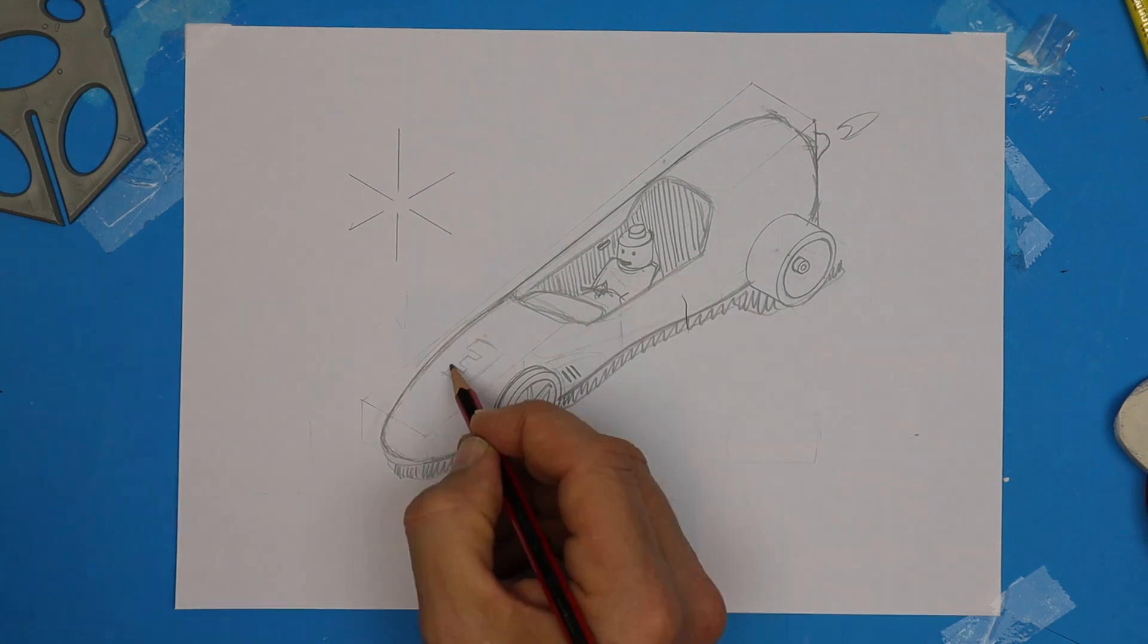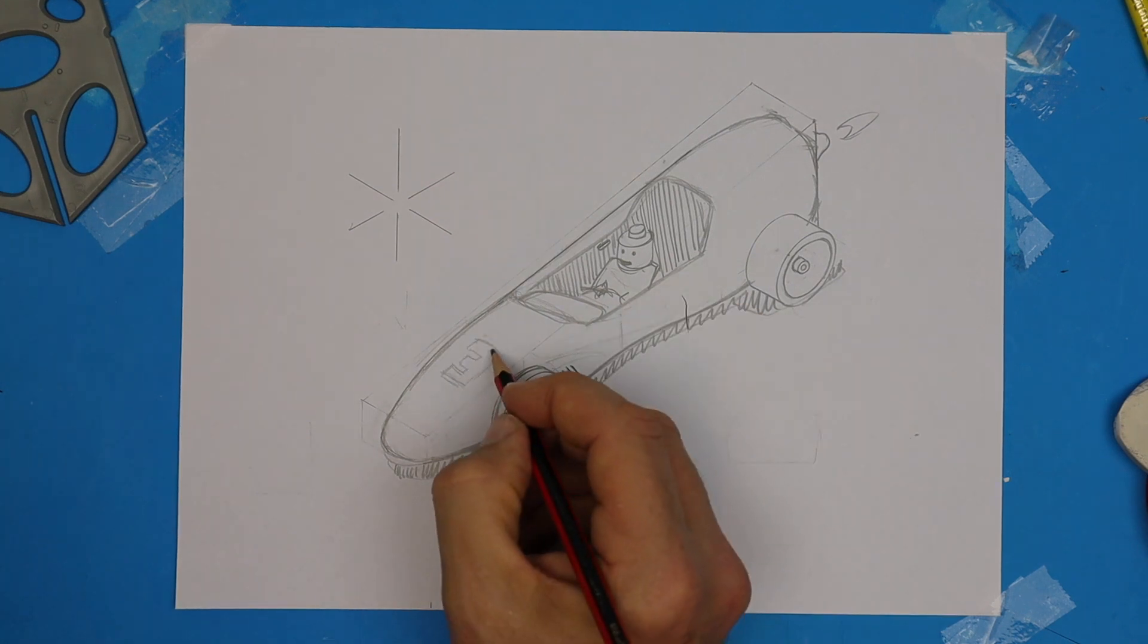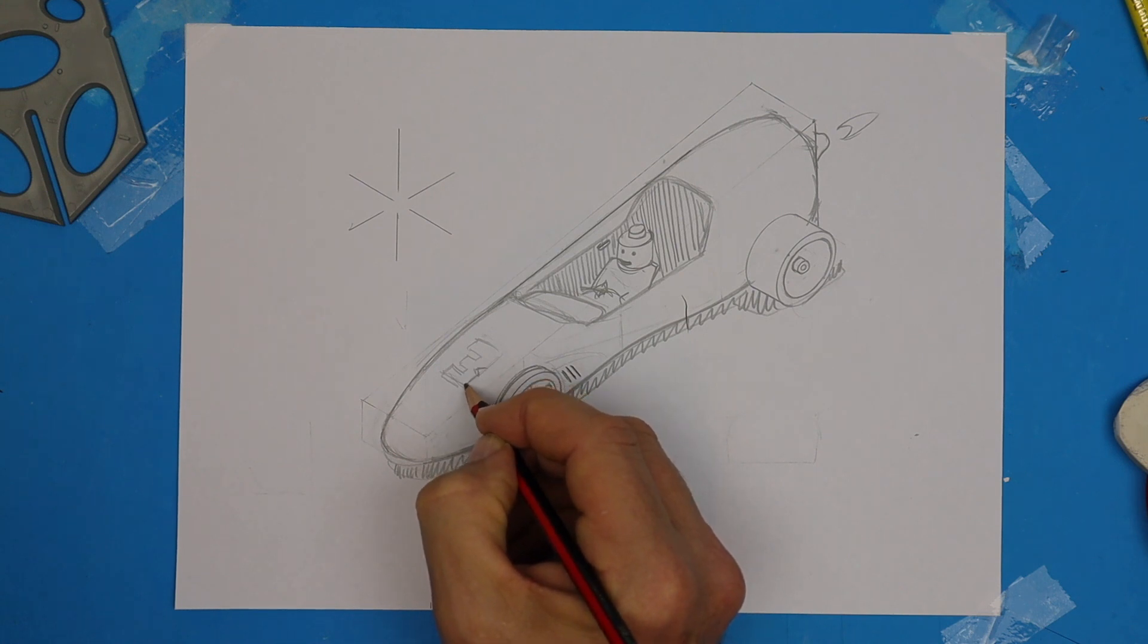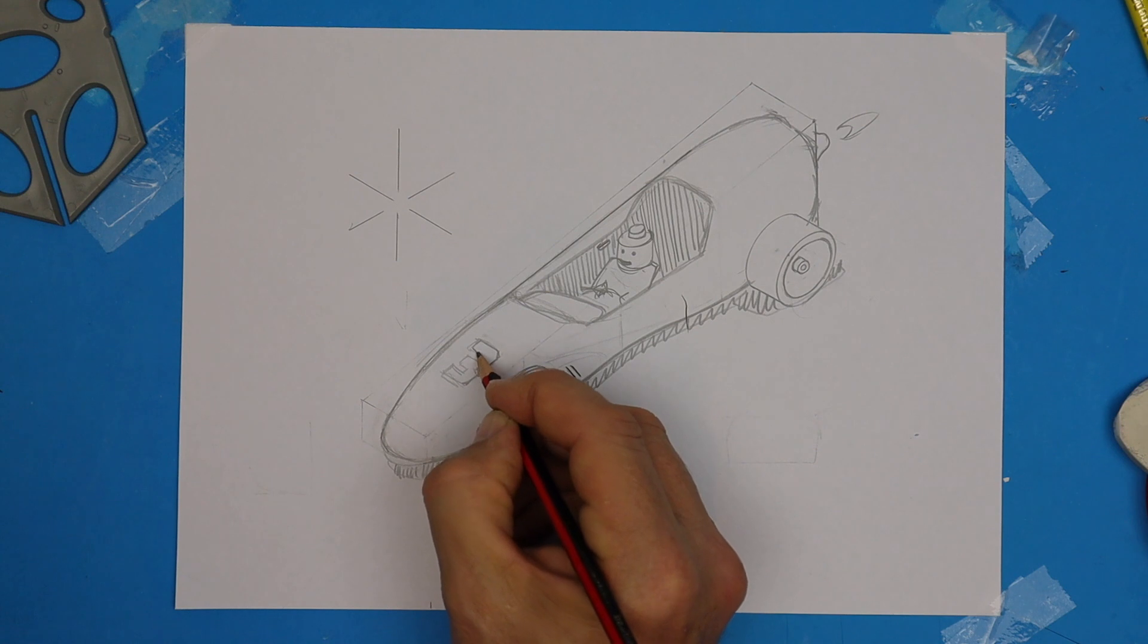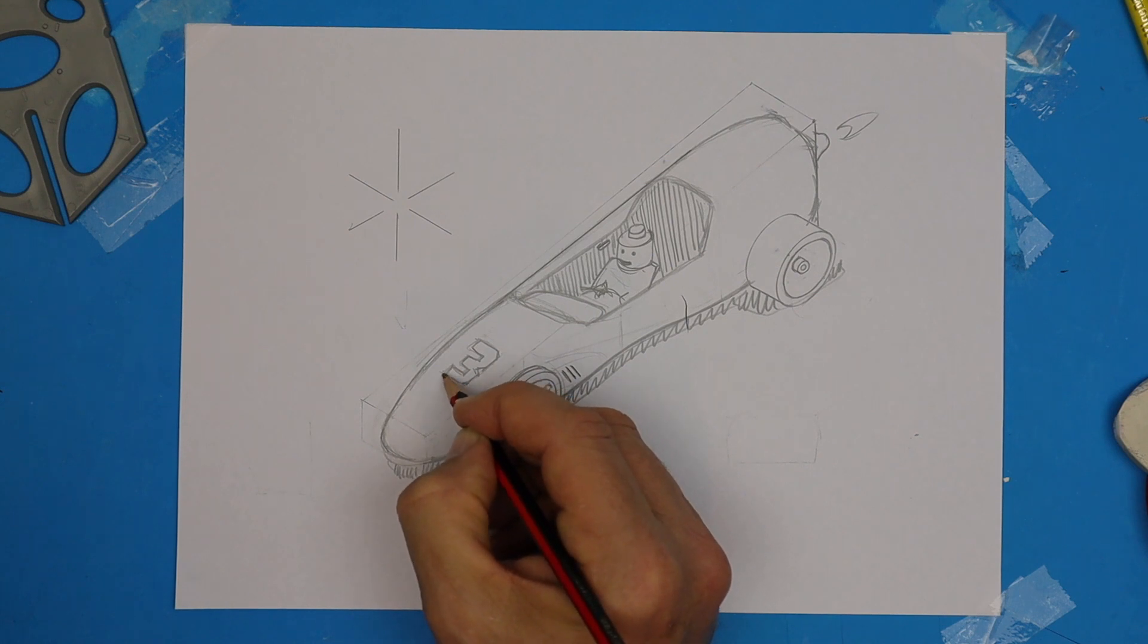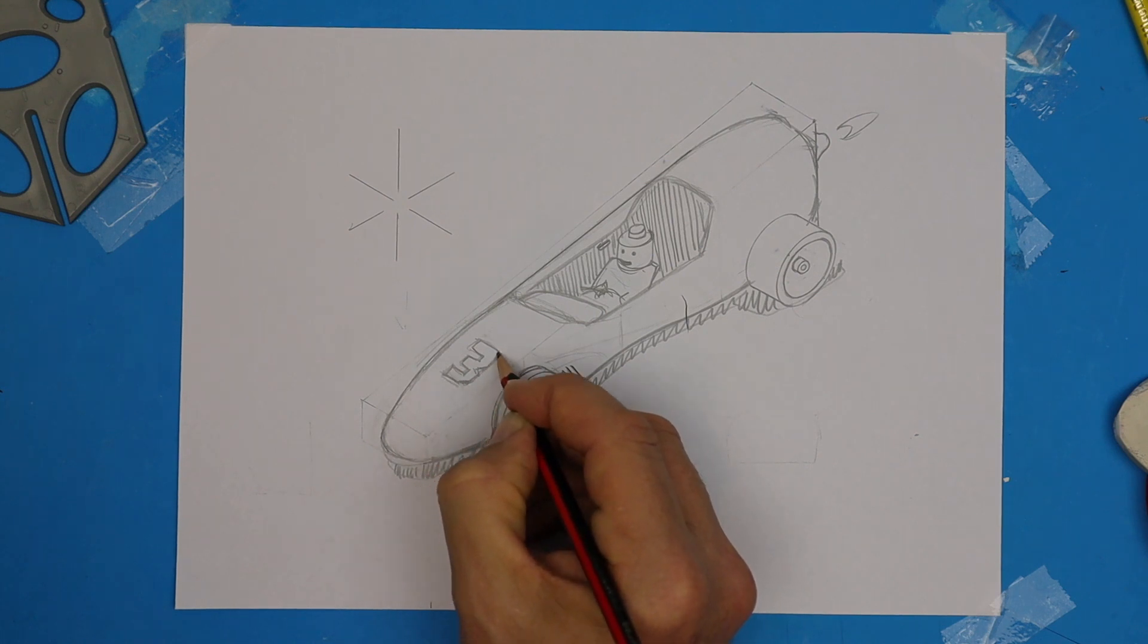Now with some research, check out some design details that you may want to incorporate into your design. It could be as simple as a race number and colors and design scheme. That's called graphics or it could be things like the air vent that I drew behind the front wheel. There is a million design details that you could incorporate. Go check them out.